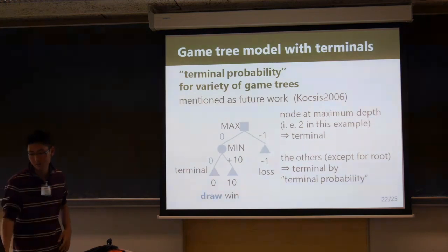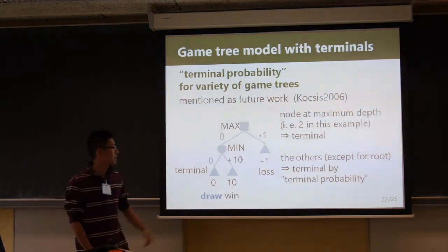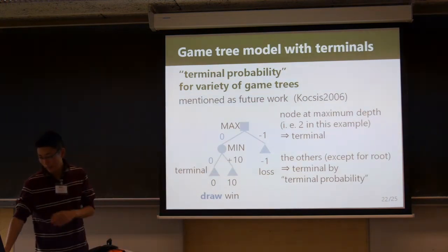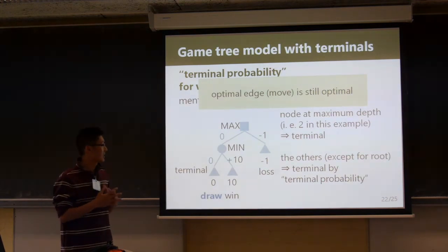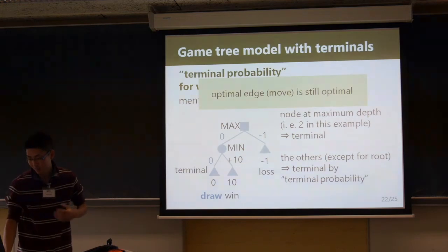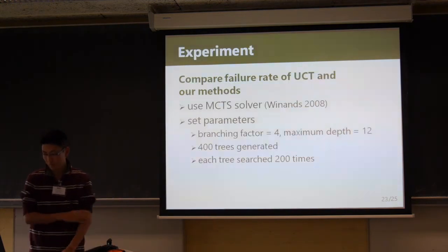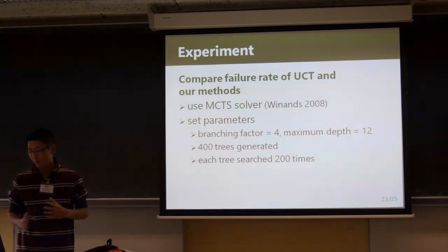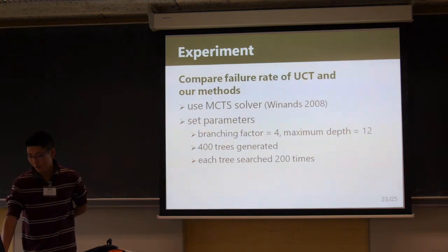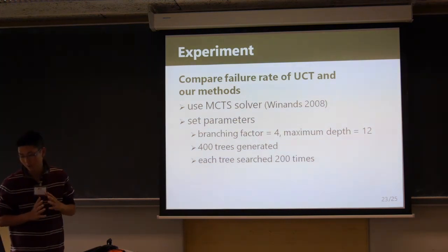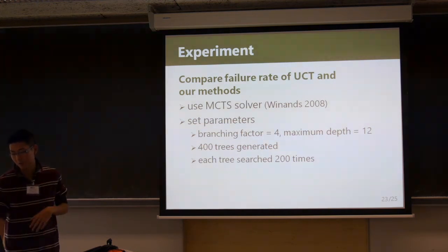In this example, the maximum depth is 2, so this node is terminal, but we also turn some nodes terminal stochastically. Note that the optimal edge is still optimal if we add lambda termination. In our experiment, we compare the failure rate of UCT and our method with exploration strategies: gradient and robust.